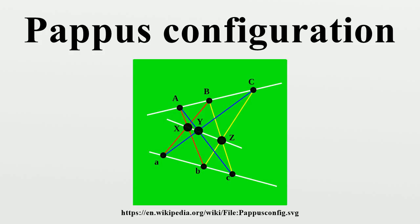The Desargues configuration can also be defined in terms of perspective triangles, and the ray configuration can be defined analogously from two tetrahedra that are in perspective with each other in four different ways, forming a desmic system of tetrahedra.